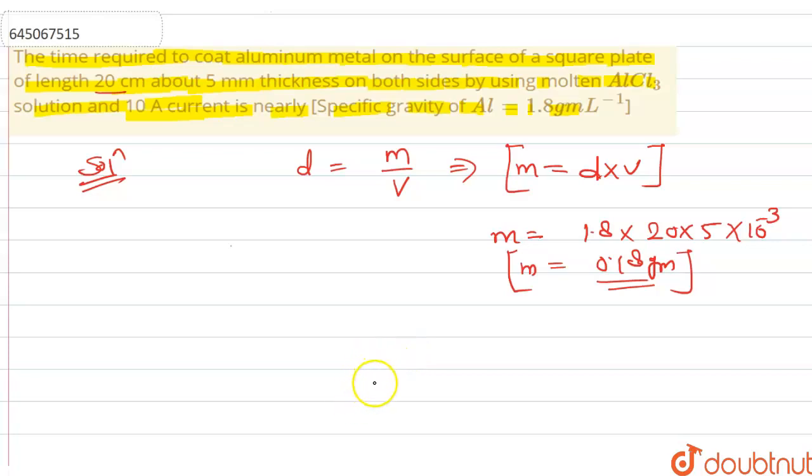Now we have to find the value of time. i equals 10 ampere. So now w equals—we know that w equals z·i·t. So here w equals 0.18, already determined.